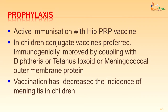Prophylaxis is available; vaccines are available against H. influenzae. Active immunization is done with the Hib PRP vaccine. In children, conjugate vaccines are preferred as immunogenicity can be improved by coupling with diphtheria or tetanus toxoid or meningococcal outer membrane protein. Introduction of the Hib vaccine in routine immunization has decreased the incidence of meningitis in children. India has also recently introduced this in routine immunization as part of a pentavalent vaccine.